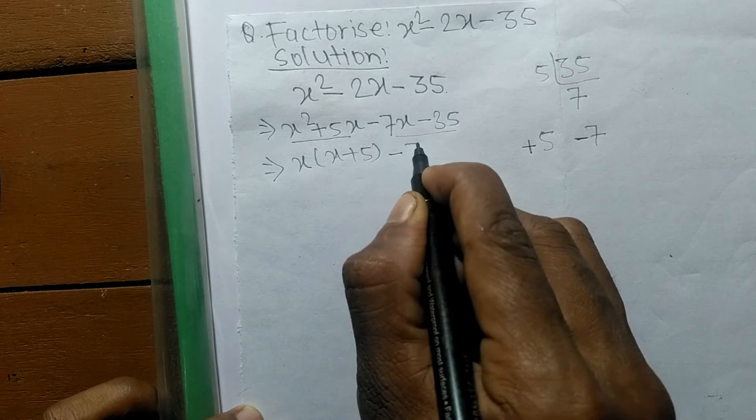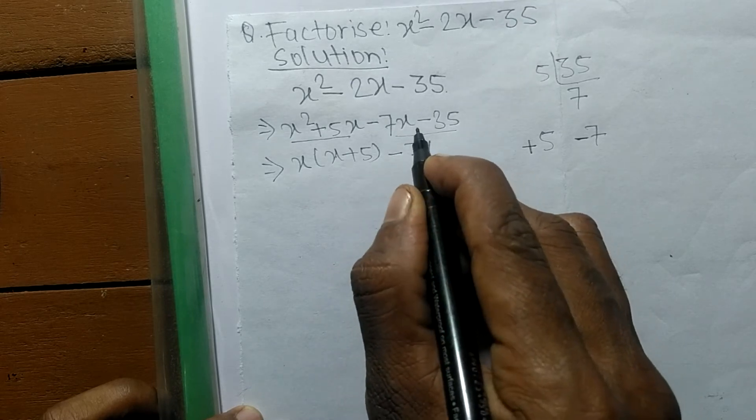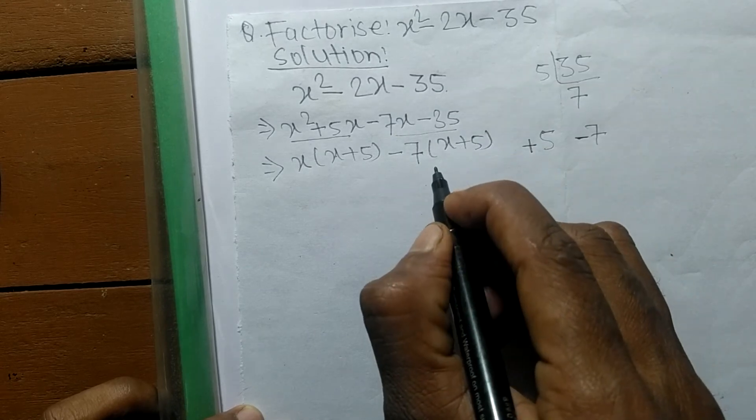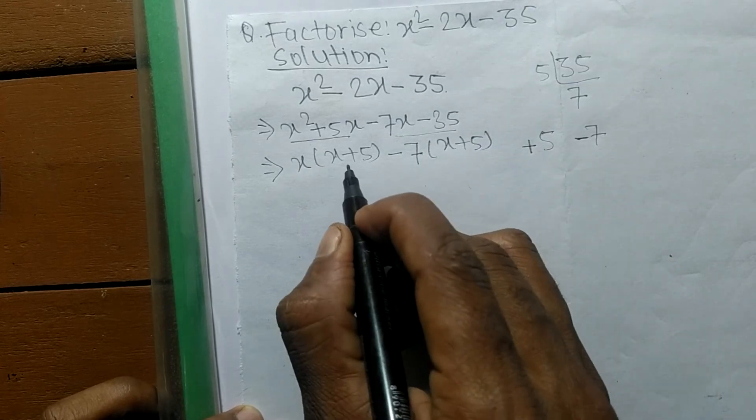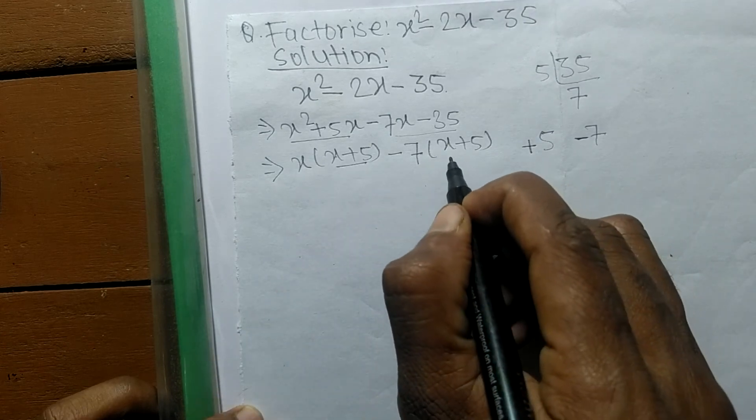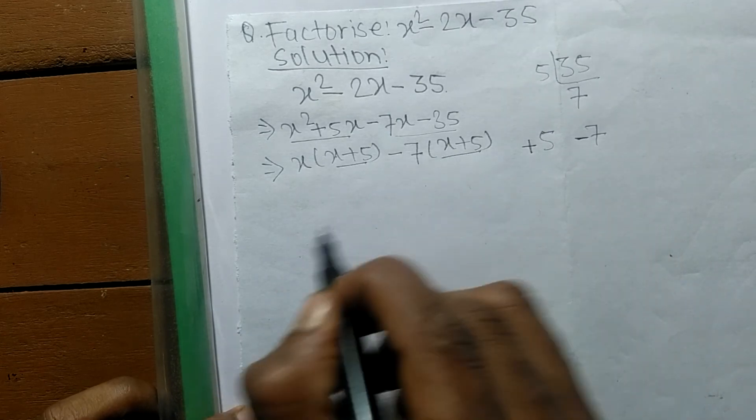In the second pair, the common here is -7, so the remaining part is x plus 5. So as you can see here, in the first expression there is x plus 5, and in the second also there is x plus 5.